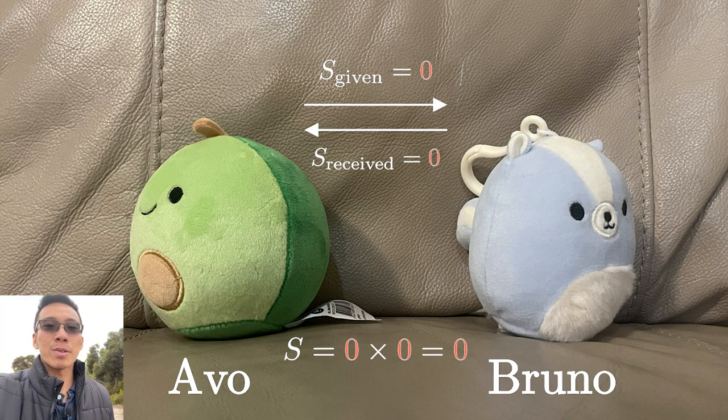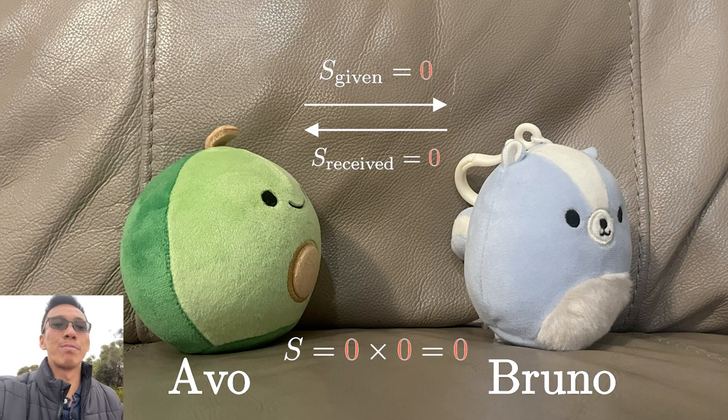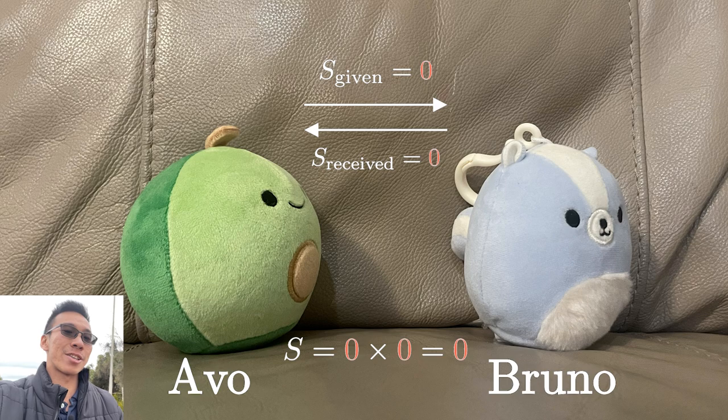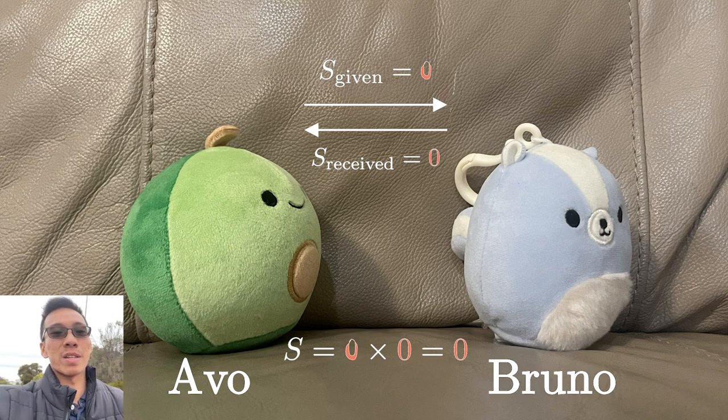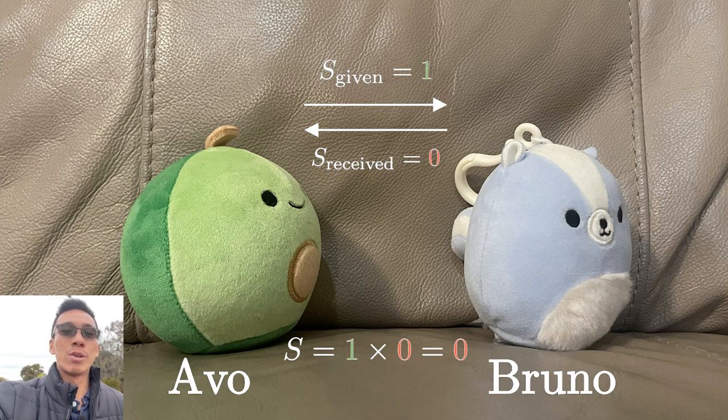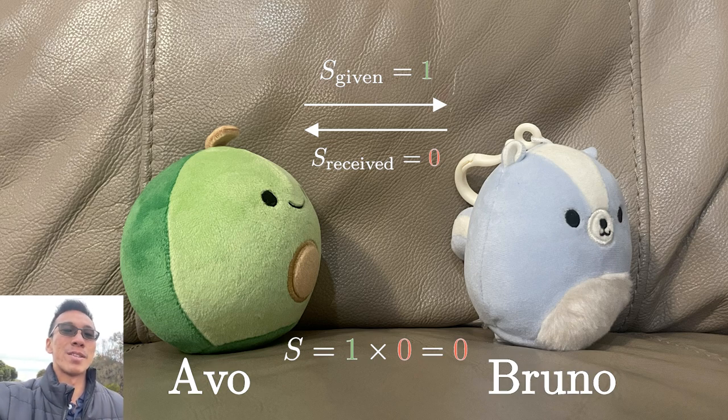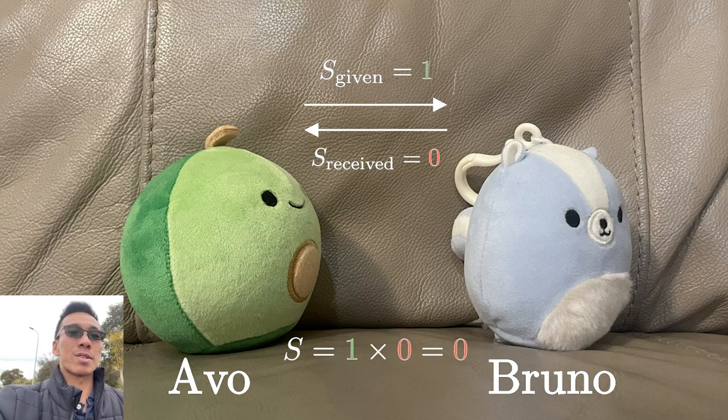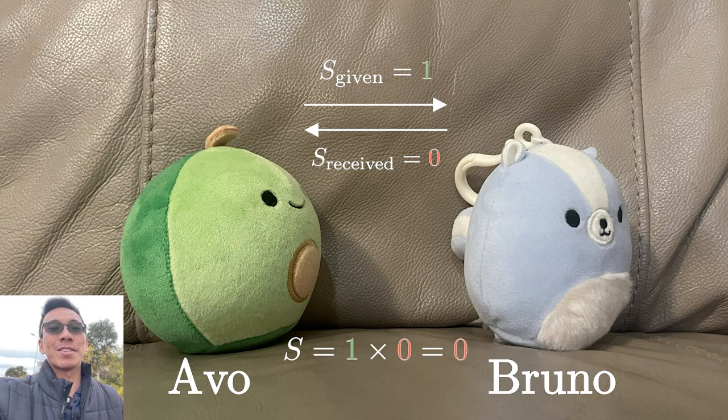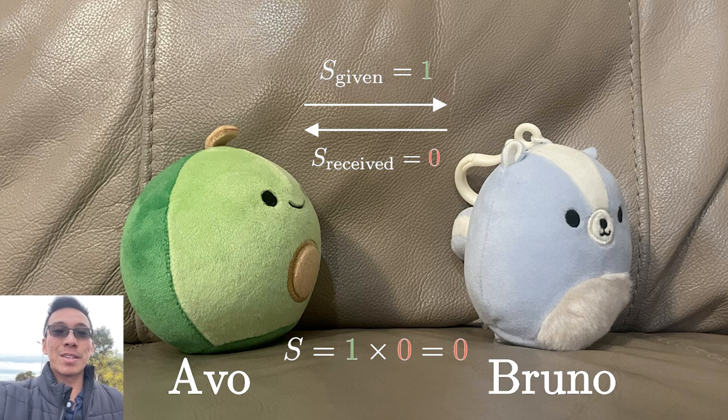On the other hand, suppose Avo wants to reconcile but Bruno is still holding a grudge. In this case, Avo wants to give Bruno space for vulnerability, but Bruno does not want to give space for vulnerability to Avo. In this case, one of the terms equals 1 while the other term equals 0, which means that the total mutual space for vulnerability is still 0. It still does not exist.